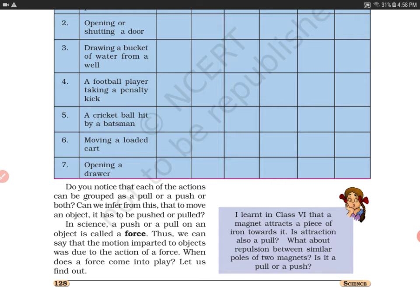In science, a push or a pull on an object is called a force. The motion imparted to objects is due to the application of force. A ball speeds up because it gets a push from behind; a ball stops because a force acts in front of it; a ball changes direction because of a strong push. So it is because of push and pull that an object comes into motion or stops.